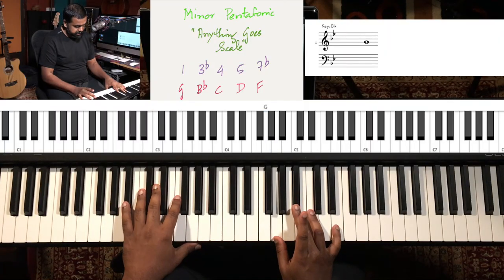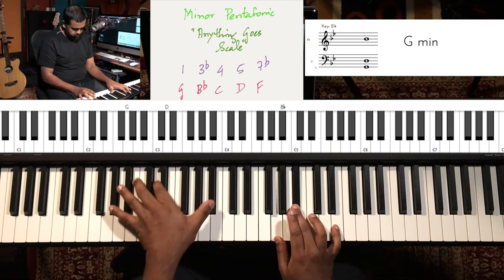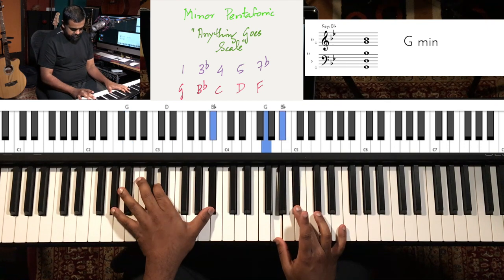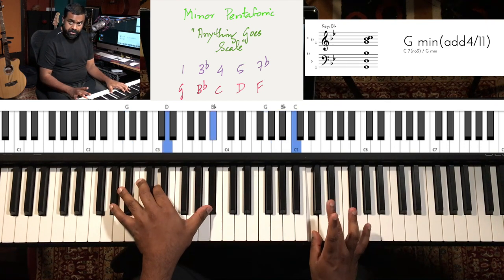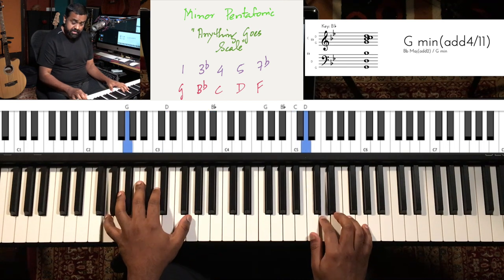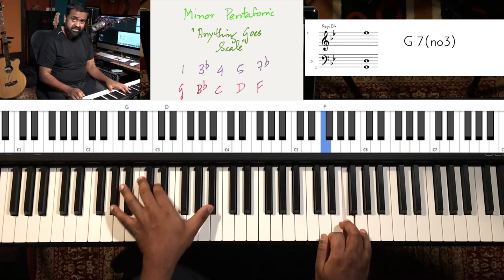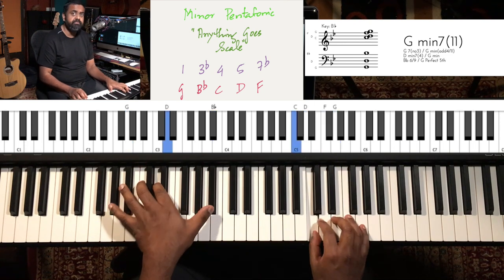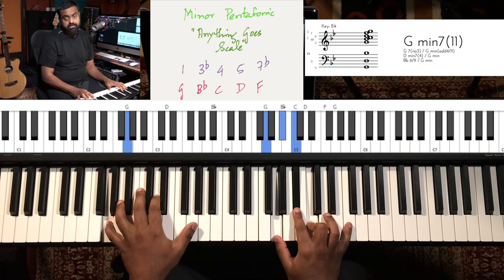The B♭ major pentatonic sounds great, but you could also create a minor version of that, which will be the G minor pentatonic. To build a G minor pentatonic, you start on G: root, minor third, perfect fourth, perfect fifth, minor seventh, octave — then back down: minor seventh, perfect fifth, perfect fourth, minor third, back to root.